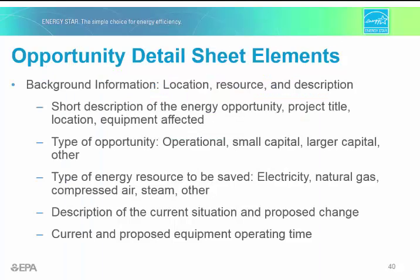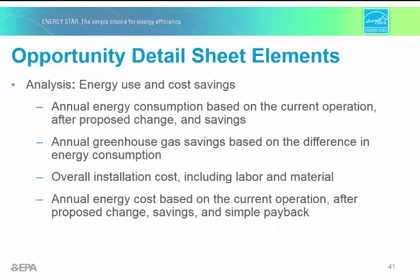Things to capture in the detail sheet include background information like the type of energy saving opportunity, the type of utility consumed, and a description that considers the pre and post opportunity conditions — like equipment run times, for example. In terms of big picture analysis, the detail sheet should house annual energy consumption and energy costs before, and then an estimate of what these things will be after proposed changes, and also things like annual greenhouse gas savings and overall installation costs.